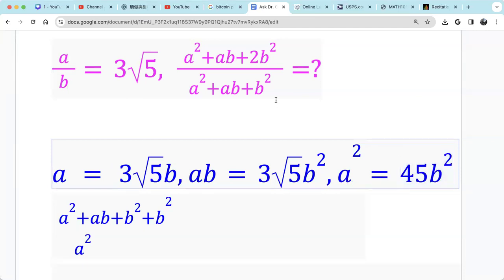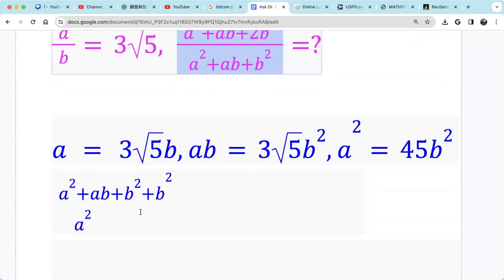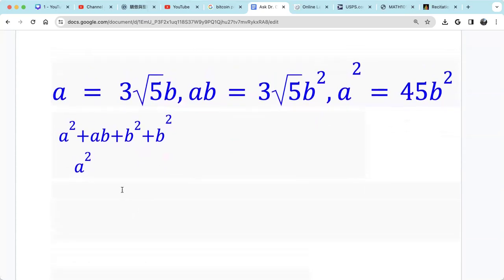So now we're set up to substitute everything into B squared. Substitute A squared, substitute AB into B squared. So we only have B squared as a variable. So let's do that.